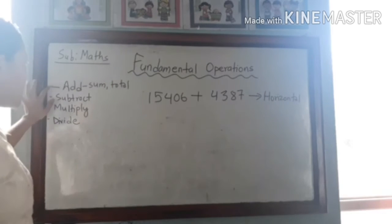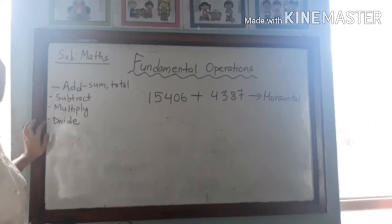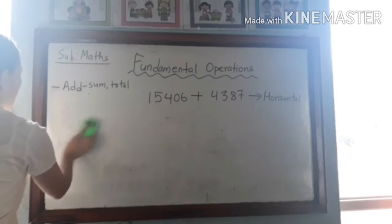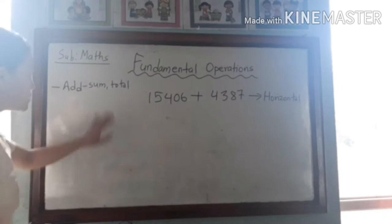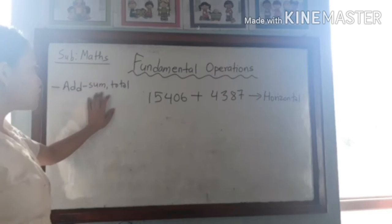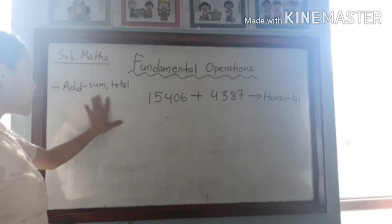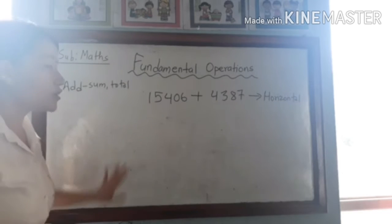Fundamental operation means doing addition, subtraction, multiplication and division of numbers. First we will learn about addition. Addition has another name like sum and total. If we are asked to find out the sum or total, then we have to be clear that we are asked to add the given numbers.